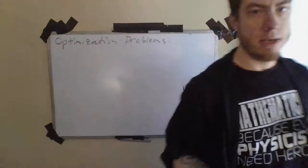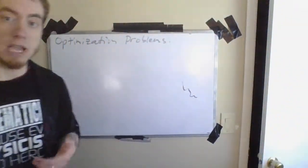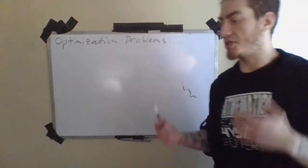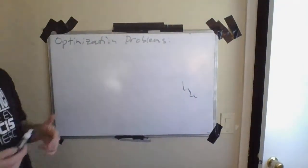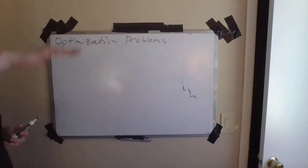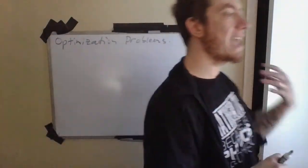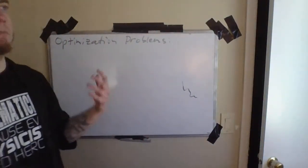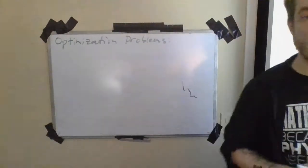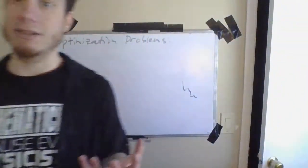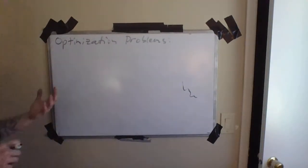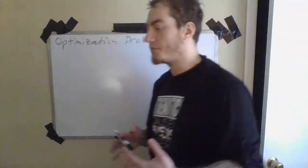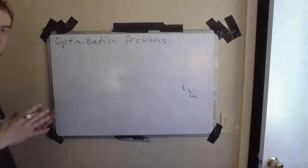Why can we use calculus for this? If you spend a minute thinking about it, you might come up with the answer. The reason is that calculus enables us to find local maximums and minimums. And if I want to really optimize something, a global maximum or minimum is going to have to either occur at some kind of endpoint, or it's going to happen at a local maximum or minimum. So calculus methods tell us how to get something as large or as small as possible.